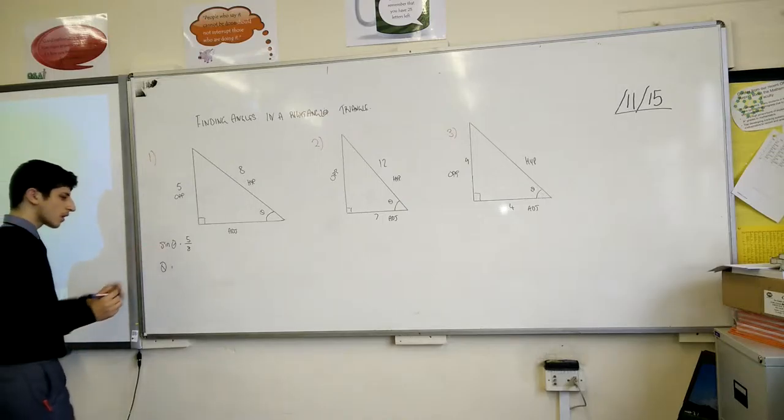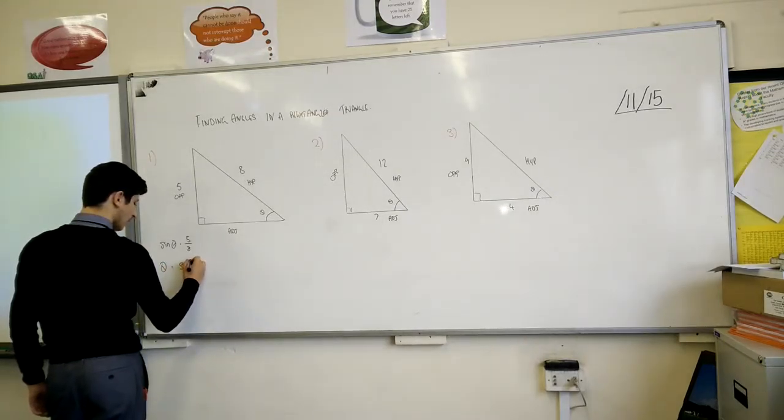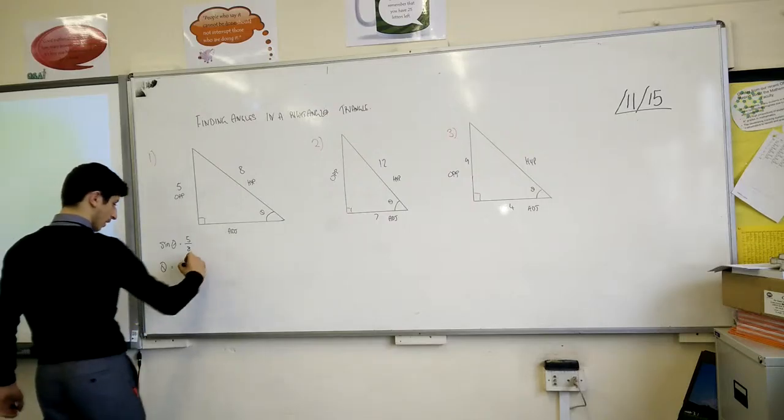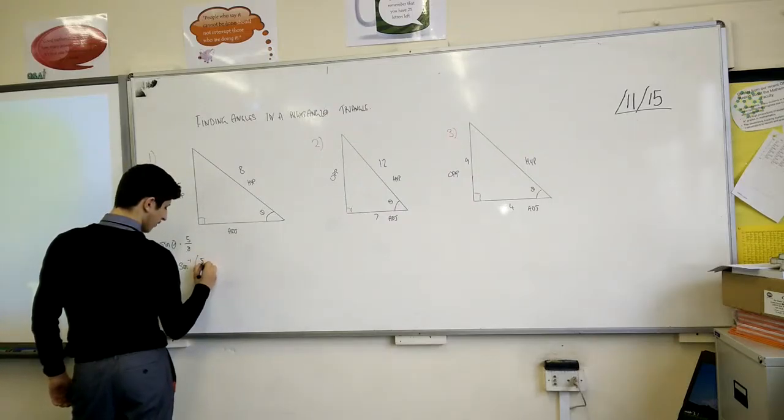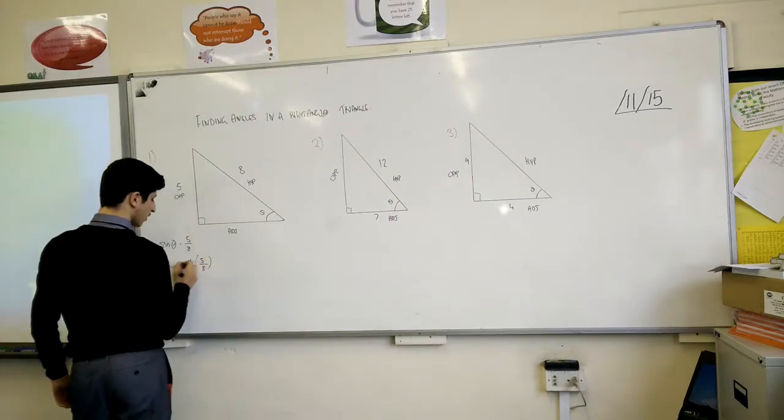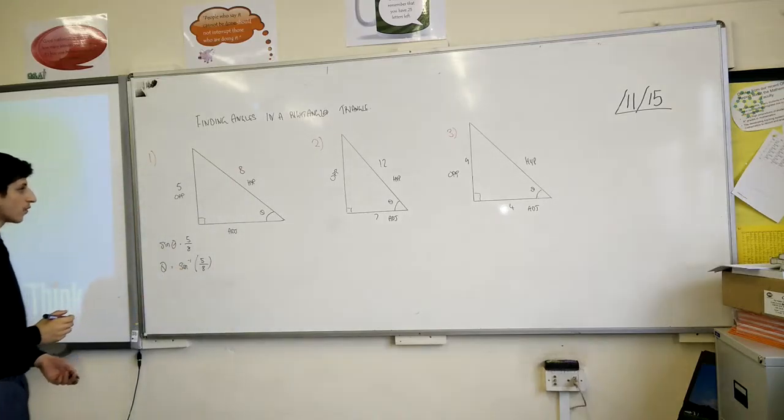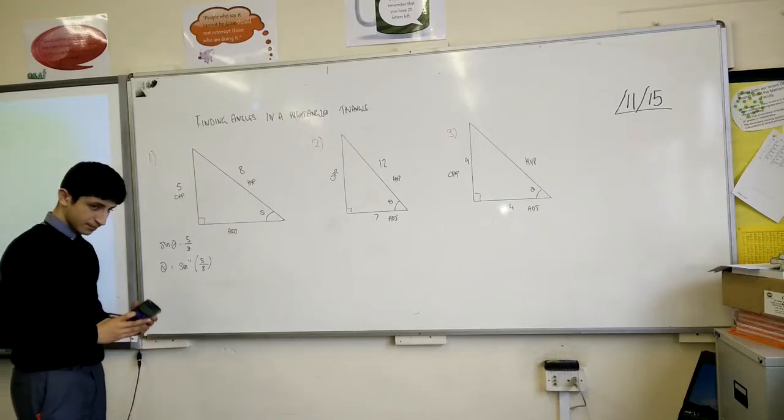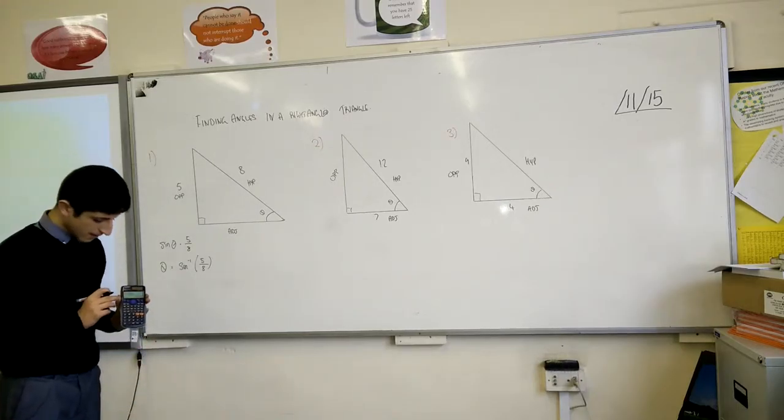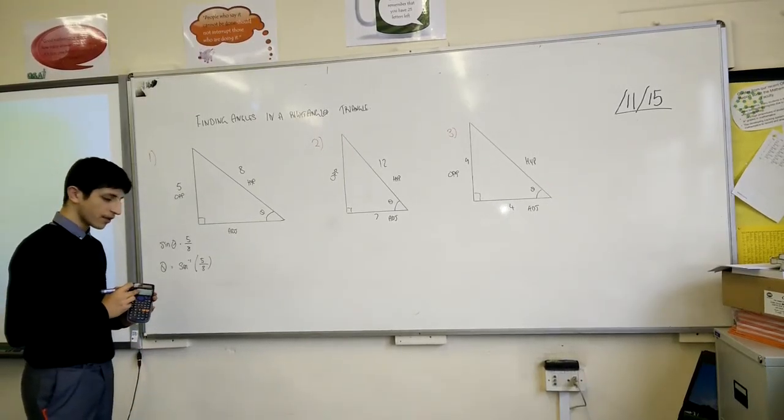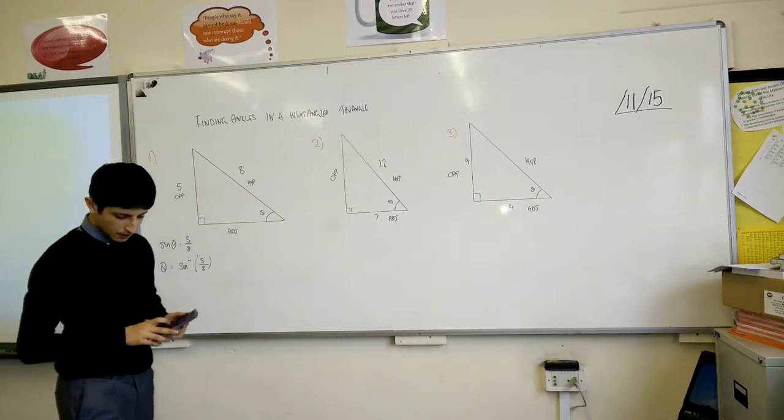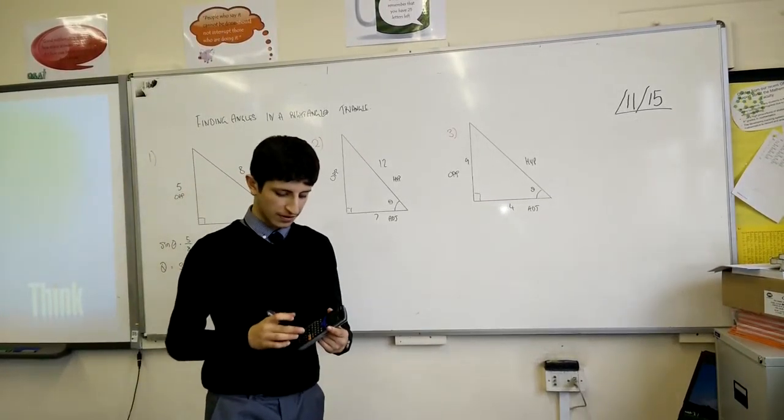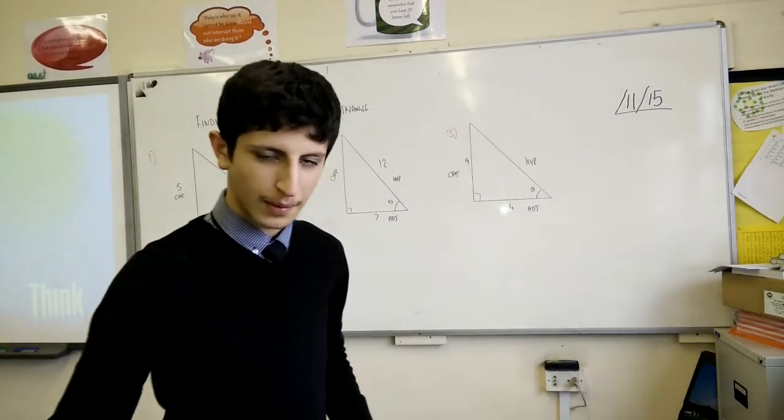What you do is a function called sine inverse, inverse being minus one in this case. You put in the bracket the ratio of the sides, opposite over hypotenuse. If I show you here, I'm going to give it to the camera: sine minus one, five eighths, and it gives you the angle of 38.6822 degrees.